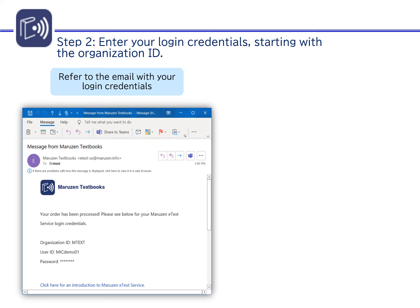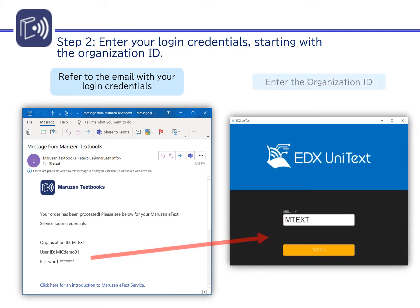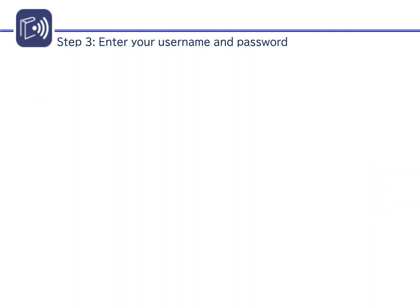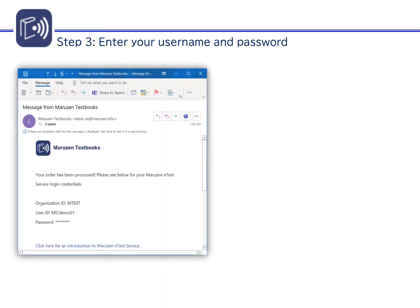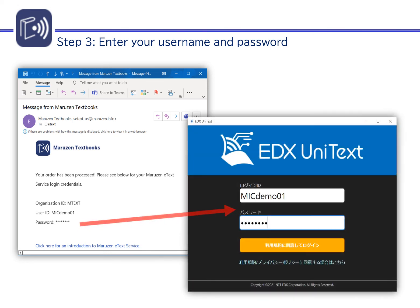Open the edX Unitext app. Enter your organization ID and click the yellow login button. Next, enter your user ID and password and click the yellow login button.